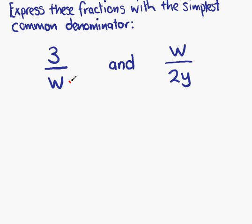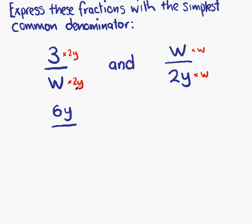w is multiplied by 2y, the denominator from the second fraction. In order for our first fraction to stay equivalent, we must multiply the numerator by the same thing. So, what we have is 3 times 2y on the top of the first fraction, which is 6y. And w times 2y on the bottom, which is 2wy.